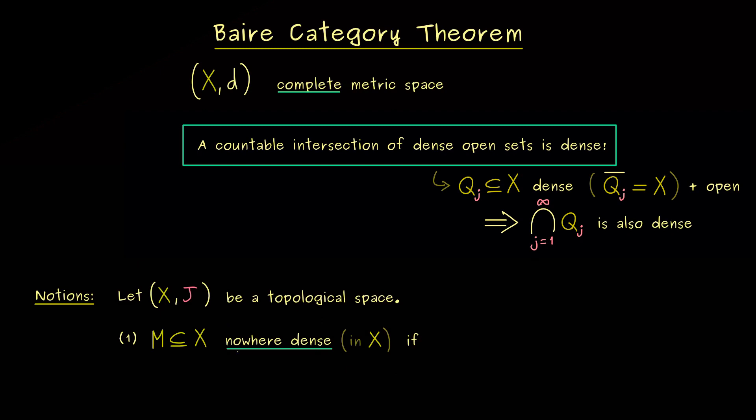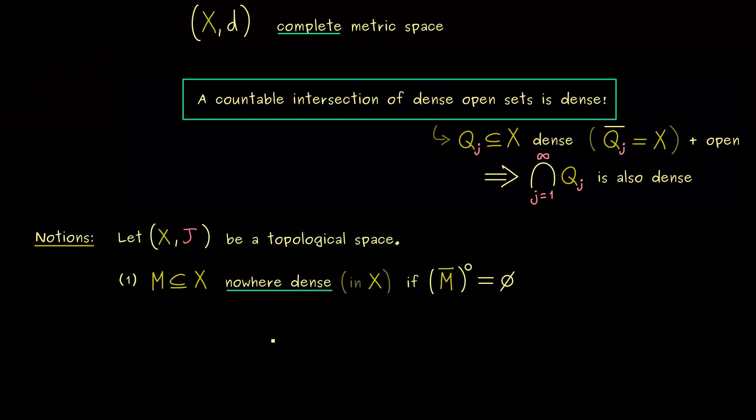Ok, so now to the definition of nowhere dense. It means we look at the closure of the set M again and now this should not be the whole space X and indeed it should be very far off. More precisely, this means that in the closure we still don't want to find any interior points. Hence the interior here should be the empty set. So you see, the set M is not even dense in an open subset of X. There we have it. You see, nowhere dense is not really a complicated notion.